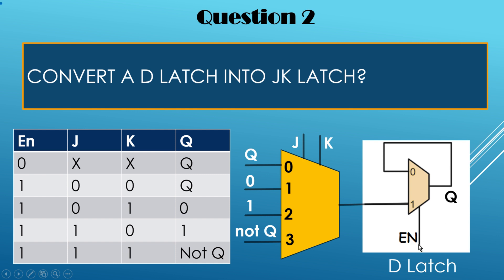We use the same Enable signal from the D latch for the JK latch. When Enable is 0, output latches to its previous value; when Enable is 1, output depends on J and K. I have used a 4-to-1 MUX with J and K as the two select lines. When J and K are both 0, the output should latch its previous value Q, so we apply Q to input line 0.